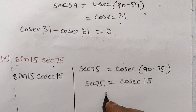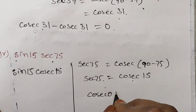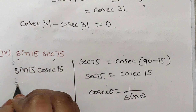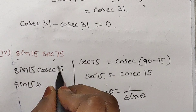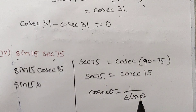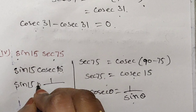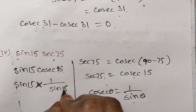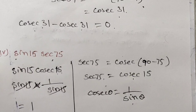You know that cosec theta is equal to 1 by sin theta. So here, sin 15 into cosec 15 is sin 15 into 1 by sin 15. Sin 15 and sin 15 will get cancelled. The answer is 1.